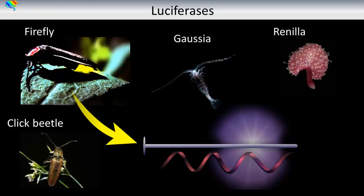The most commonly used Luciferases for InVivo Imaging are isolated from the Firefly, the Click Beetle, the Gaussia copepod, or Renilla. Firefly and Click Beetle Luciferase use D-Luciferin as a substrate, while Gaussia and Renilla Luciferase use Coelentrazine.